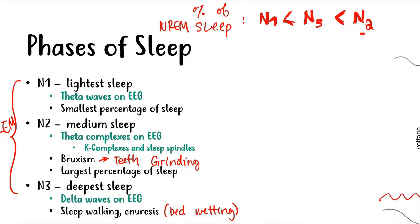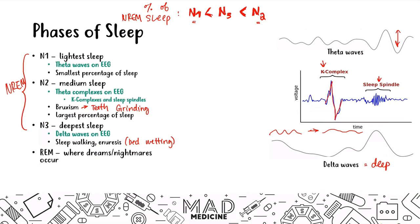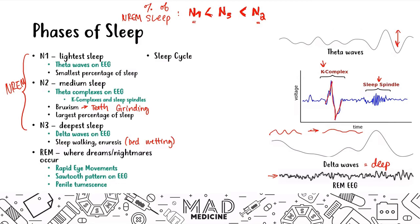After N3 you have REM sleep. This is where your dreams and nightmares reside. REM stands for rapid eye movements. In REM sleep you have a characteristic sawtooth pattern on the EEG. This is also associated with penile tumescence, which is having an erection while someone is asleep. That's pretty much everything you need to know about the phases of sleep.